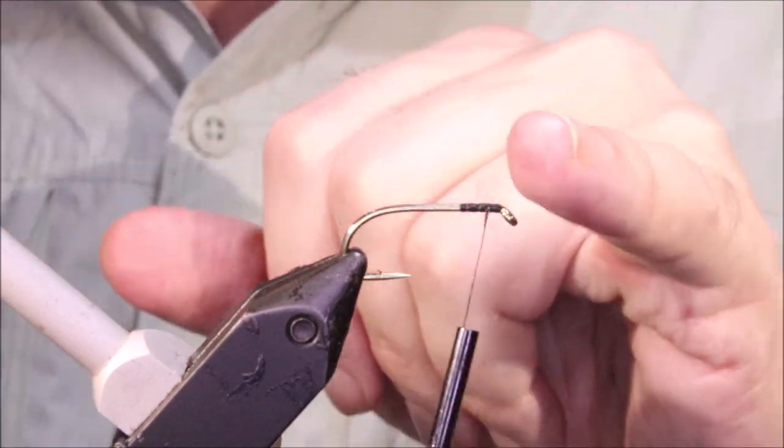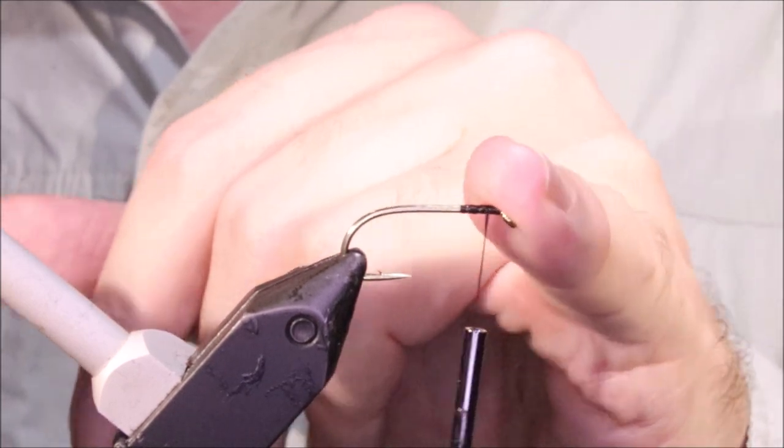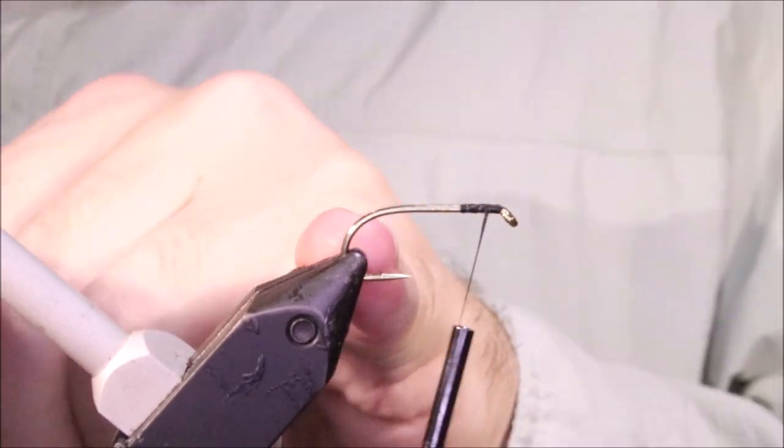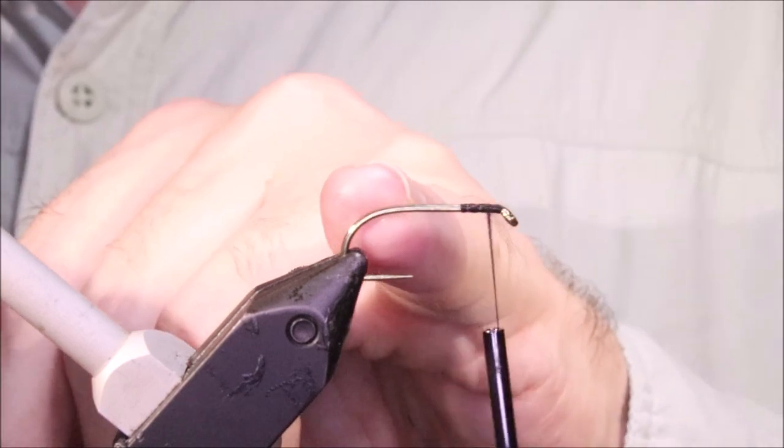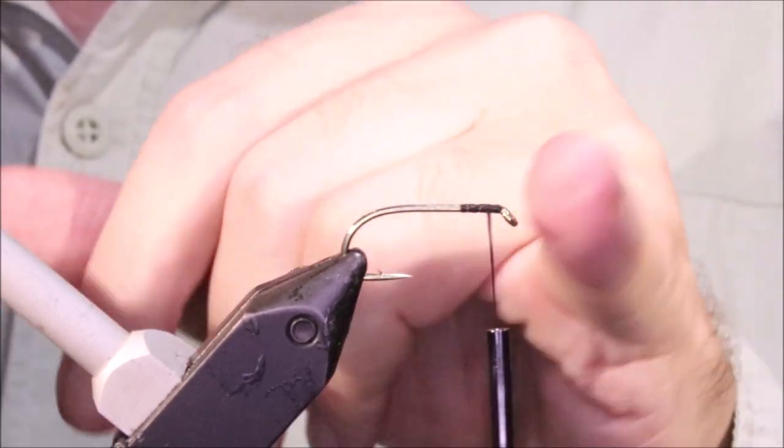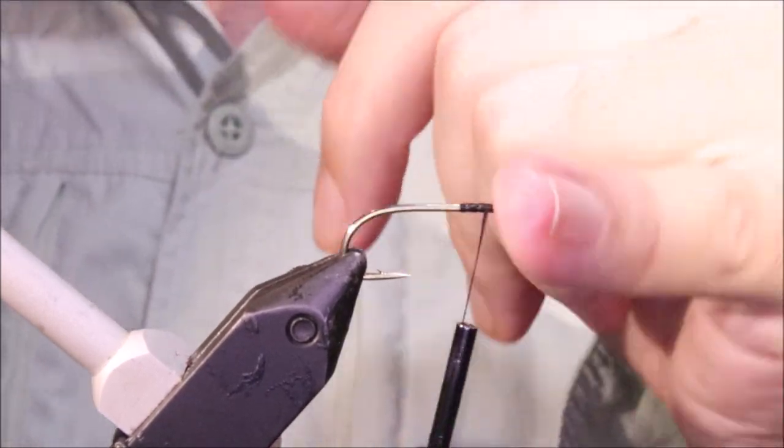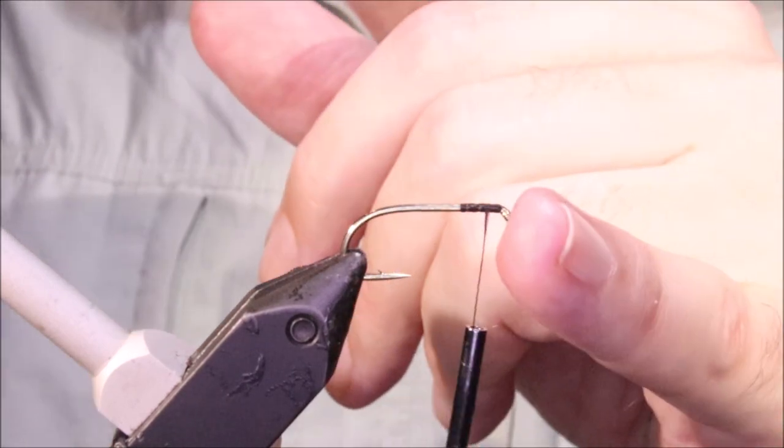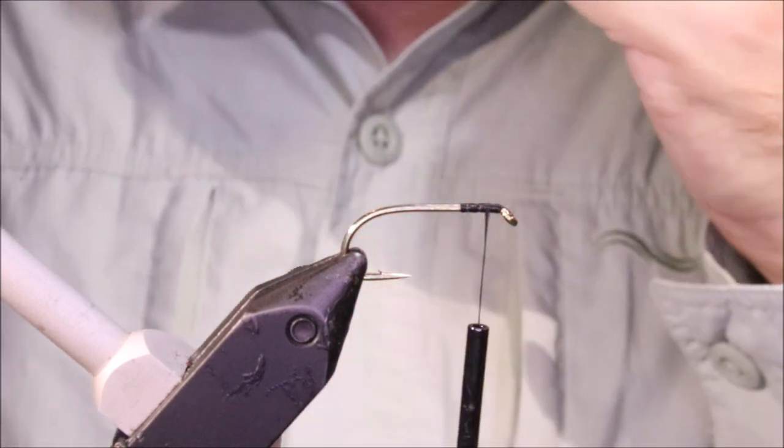So I've got my hook and my vise. I'm using a Kamasan B175 and this is a size 6. I would tie these in a size 6 and a size 10. The original hooks are TMCO 3769 which has about the same shank length but a narrower gape and it's not as strong. The B175 is a stronger hook, wider gape so it's grabbier. I've never had one of these open out in a carp but I have had the TMCO hooks open out.